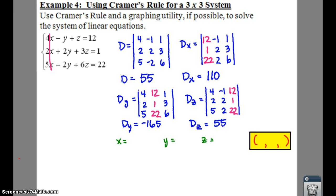So, in order to find out what your x, y, and z are, x is just D sub x over D. We're going to take your D sub x, which is 110, and divide that by 55. That gives you x equals 2.